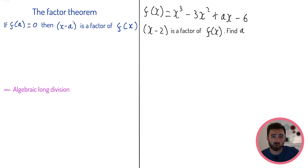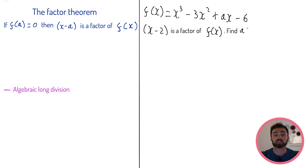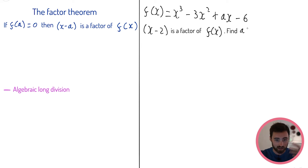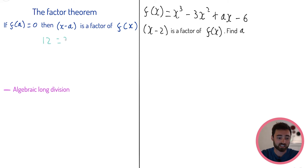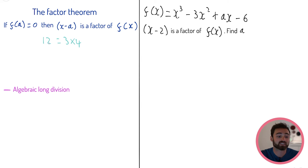Let's talk about what the factor theorem is. Imagine we've got some polynomial function — something with different powers of x; it could be a straight line, a quadratic, a cubic, a quartic, any kind of polynomial. If f(a), where a is just some number, equals zero, then (x − a) is a factor of f(x). What does this mean? Factors are things that multiply together to make something — this applies to numbers but also to algebra.